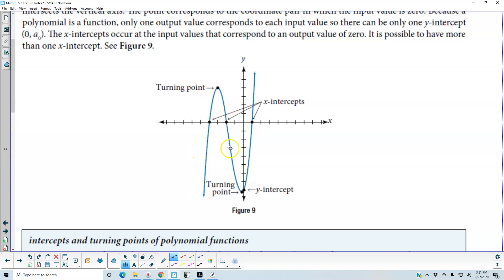Here is a turning point, down here is a turning point, and it crosses the y-axis and there is the y-intercept.